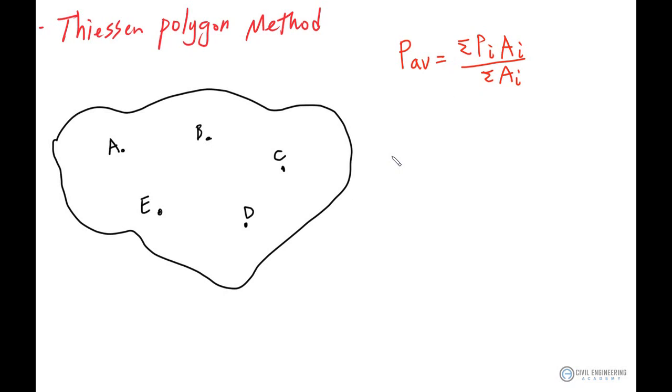That's where this Thiessen polygon method comes into play. So this representative area will serve as the weighting factor in this weighted average calculation. The larger the area is, the more the data from that rain gauge is going to contribute to the final average value.